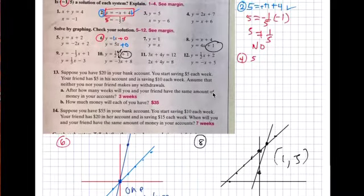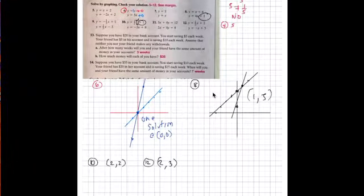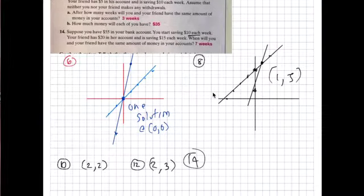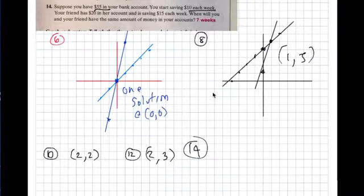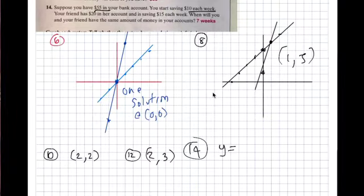Number fourteen. The answer is seven weeks. Suppose you have fifty five dollars in your bank account, you start saving ten dollars each week. Your friend has twenty dollars in their account and is saving fifteen dollars per week. When will you and your friend have the same amount of money in the bank? The best thing to do here is substitution. Your equation is y equals ten dollars each week plus the fifty five dollars you have in there.